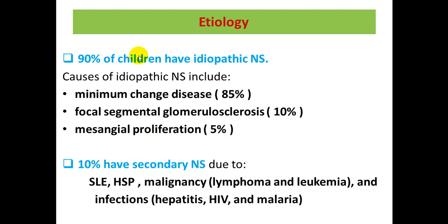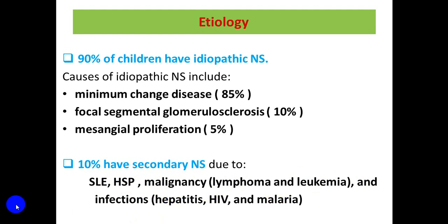The second group is secondary nephrotic syndrome, with an identifiable underlying cause, accounting for about 10% of cases. Underlying causes include SLE, Henoch-Schönlein purpura, malignancy such as lymphoma or leukemia, and infectious diseases such as hepatitis, HIV, and malaria.